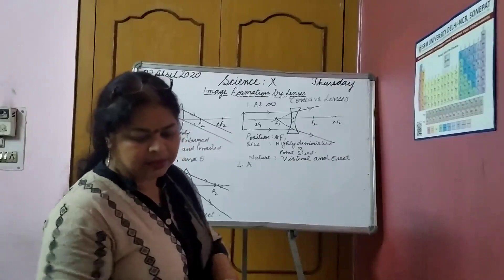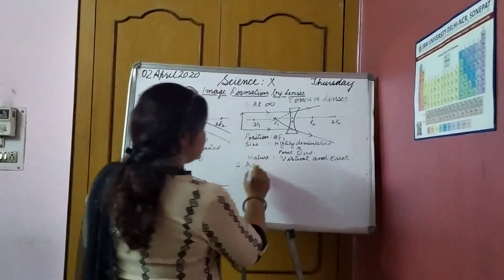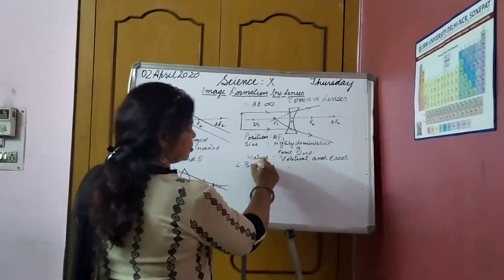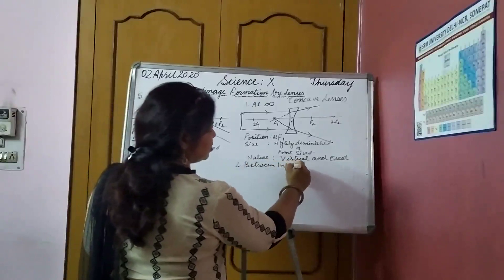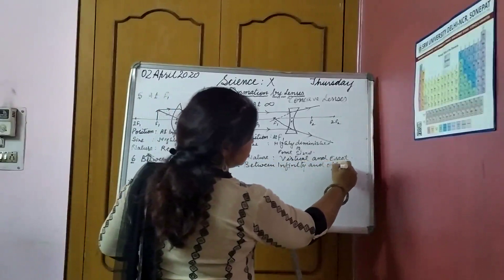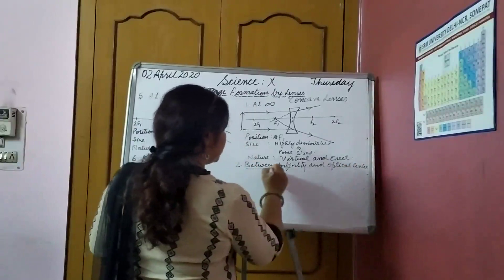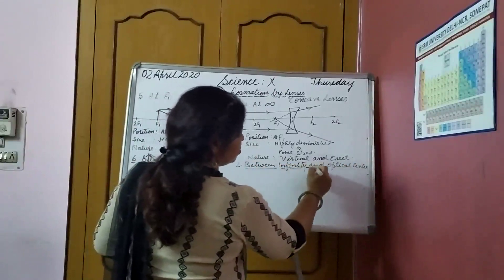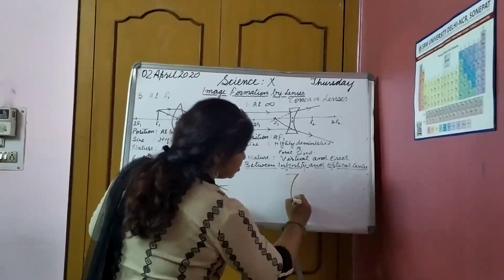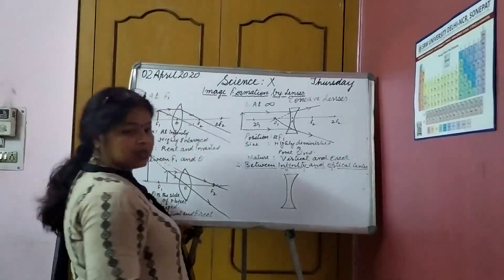So, in that case, how it takes place? It is at, sorry, between infinity and optical center. This is the location of the object. Let us again draw the diagram of our concave lens.